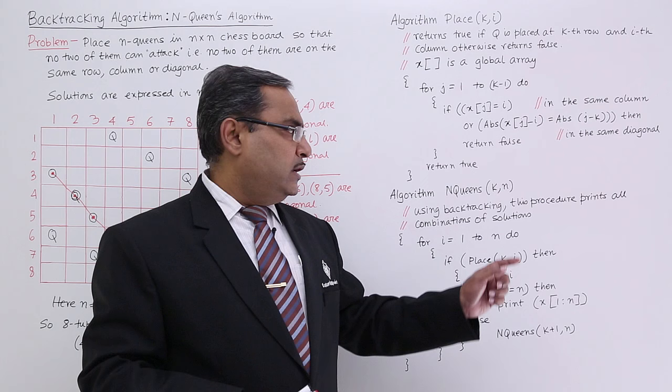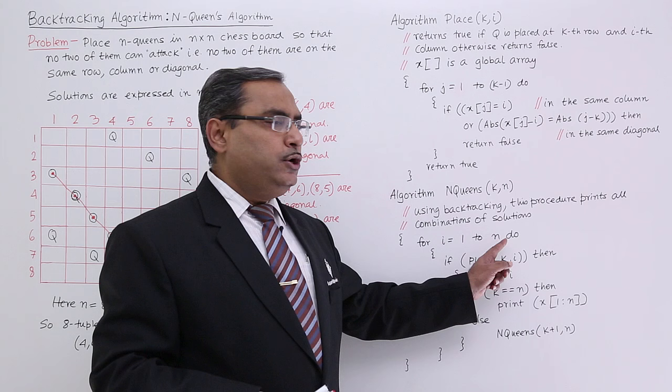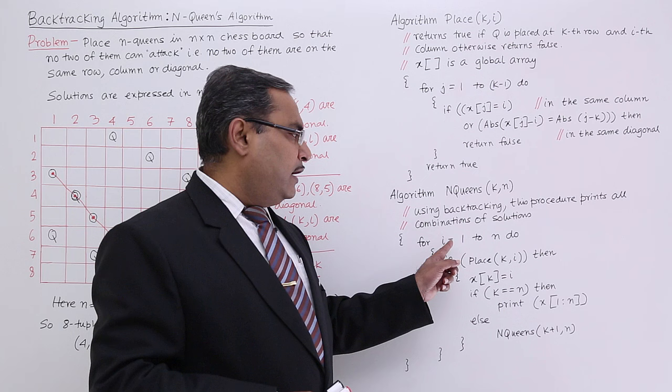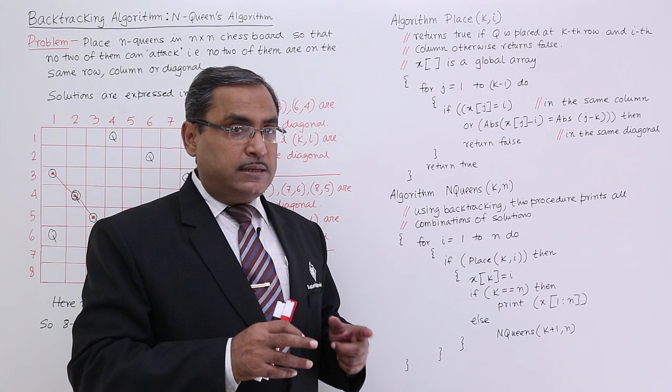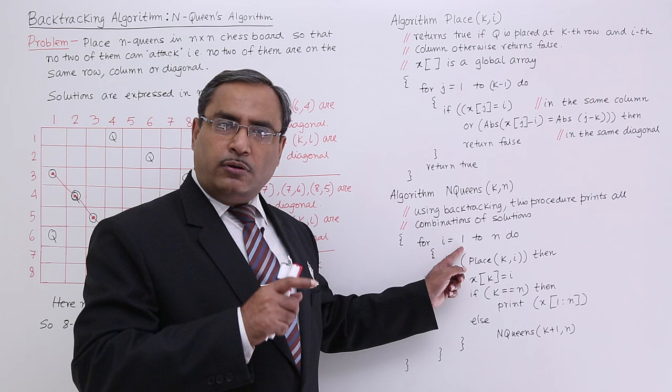So 1 will be coming down here. For i equal to 1 to N, that means for that particular kth queen, I shall try for all columns. The kth queen will be at the kth row — that is not a problem. But at which column, that is the main issue. So I shall try for the kth queen for all possible column numbers ranging from 1 to N.